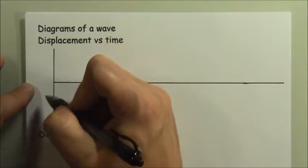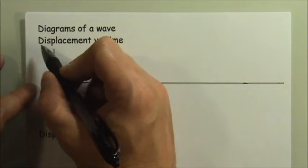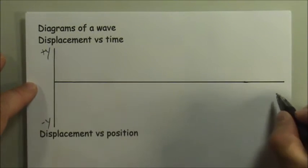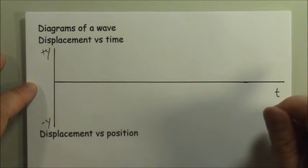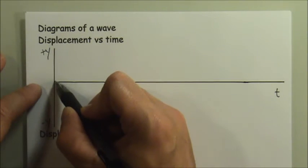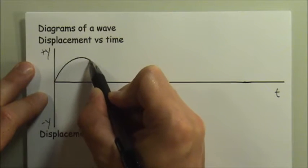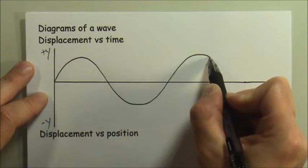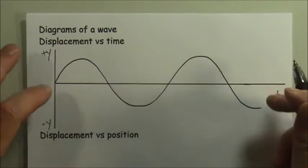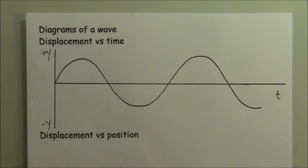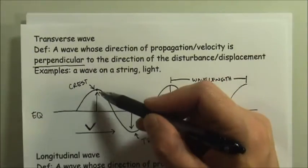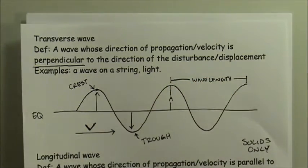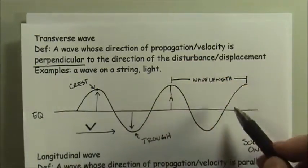For displacement we're going to talk about vertical motion, using the y direction — positive and negative y — while along the horizontal axis we have time, measured in seconds. So a displacement versus time graph might look something like a sinusoidal curve. What you're looking at is one spot on the oscillator going up and down — to the positive y, then negative y, positive y, negative y — so we're looking at just one particular spot, not the overall wave.